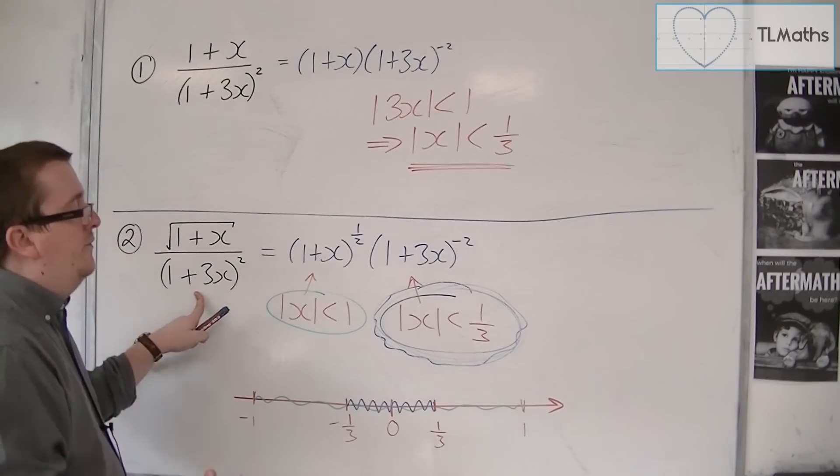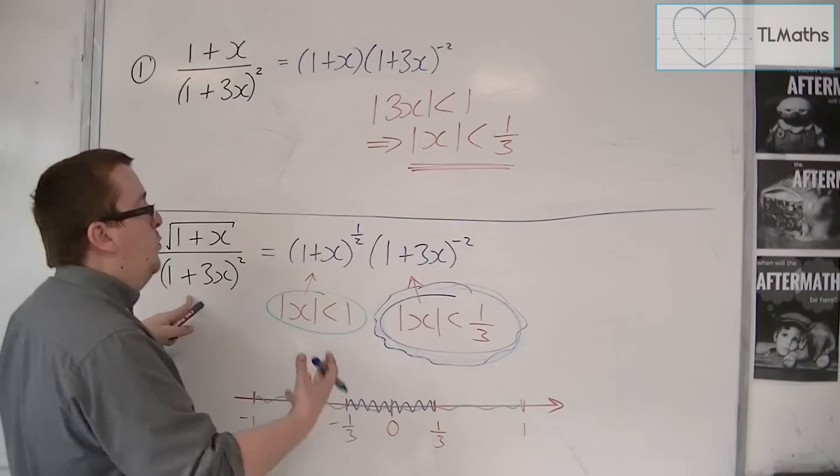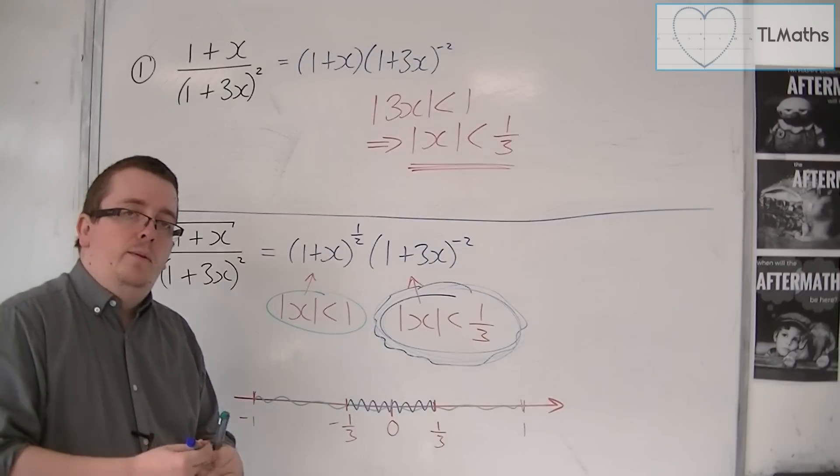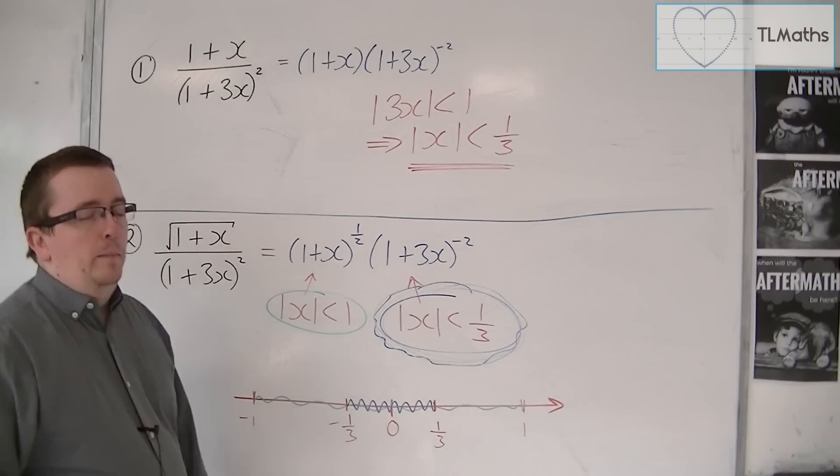Because we need to have the numbers being put in need to work for both. So we're looking for where they overlap. So that's how you deal with a problem like that.